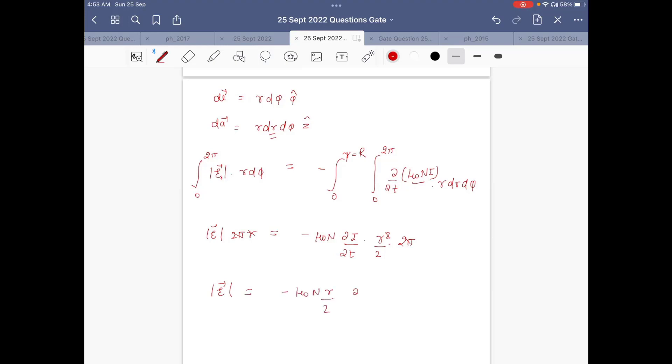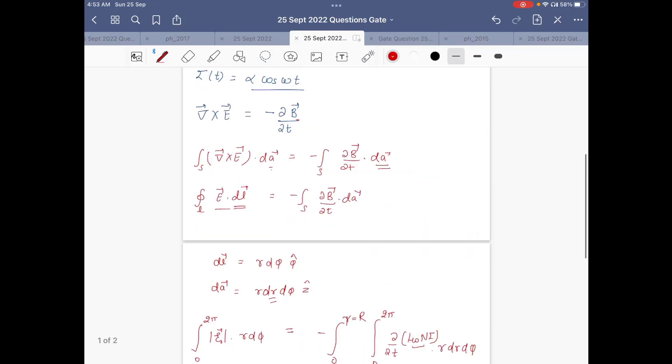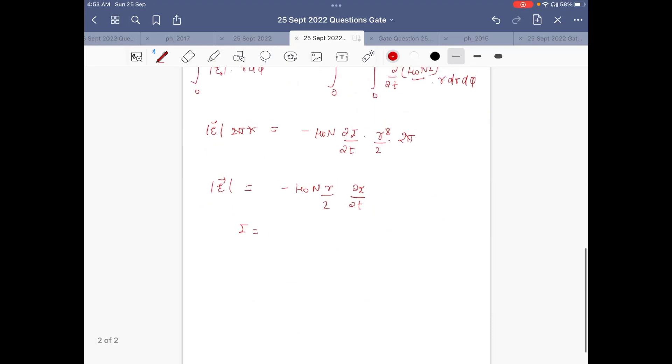It will become |E| = μ₀N (R/2) ∂I/∂t. I is given by α cos ωt, and R is capital R at the surface. So the electric field magnitude at the surface is μ₀N capital R/2 times ∂I/∂t.